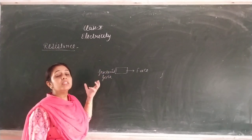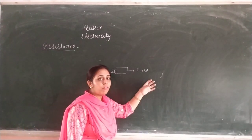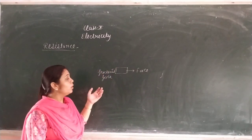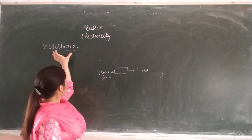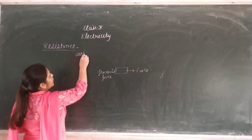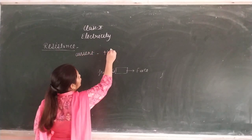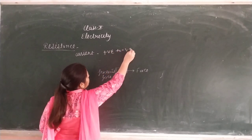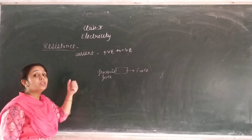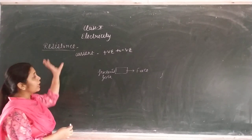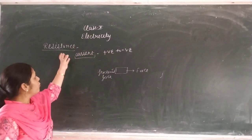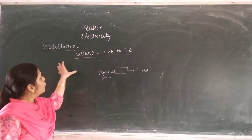What does this do? It opposes. Suppose the object is going in the forward direction, so the frictional force acts in the backward direction — it opposes. That is called frictional force. The same function is performed by resistance. We are doing current flow. Current direction we have done — it moves from positive to negative. So what does resistance do? It will oppose — positive to negative. It will stop the current. That is called resistance.